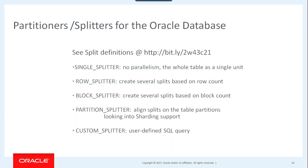Partitioner — or splitter. You can see the definition at the doc link I've provided. Right now we have five partitioners. We also call them splitters because we started this with Hadoop, where we provided the mechanism for turning Oracle tables into Hadoop data sources, and in Hadoop vocabulary they're called splitters. So splitter and partitioner are the same thing.